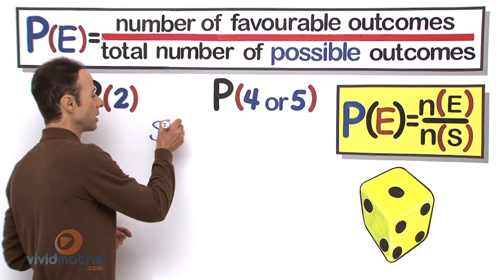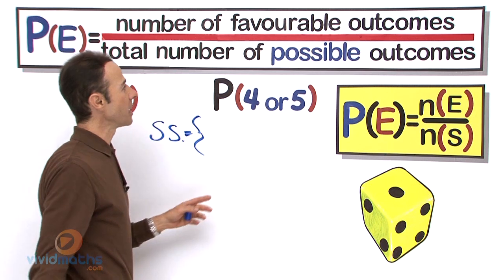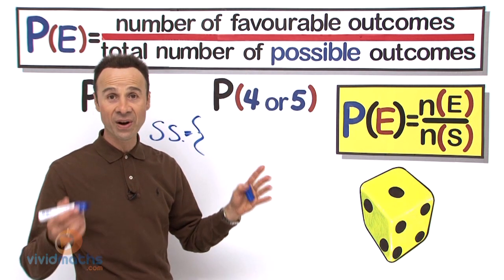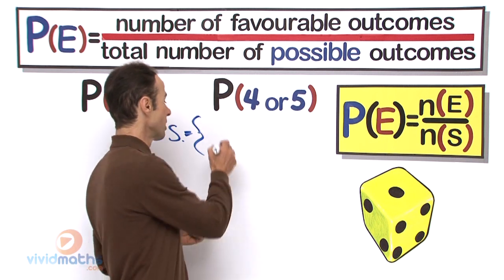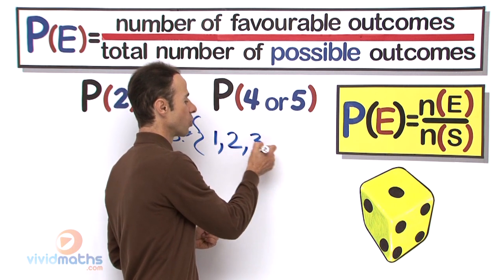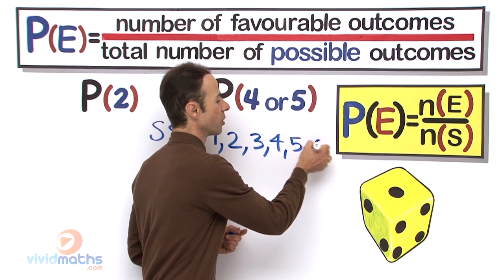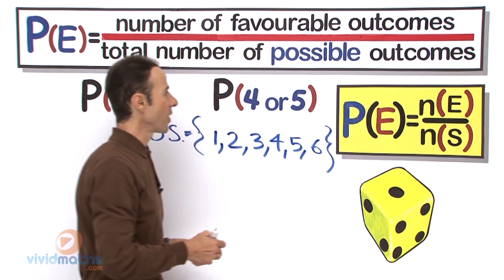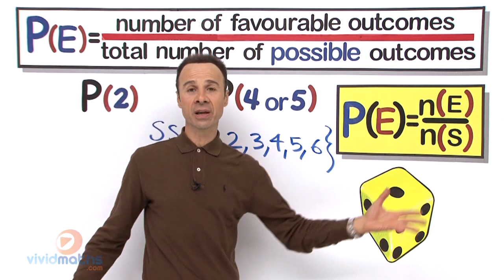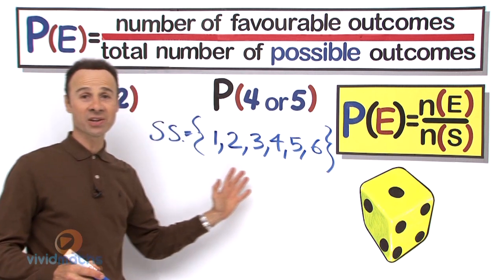So the sample space, let us call it SS, equals, and inside the sample space we are going to have the 6 faces. So we write down each face and what the score is for each one. So it is going to be 1, 2, 3, 4, 5, and of course 6. And that is the possible outcomes from the event of rolling a dice. Now it is also referred to as the sample space as I mentioned earlier.